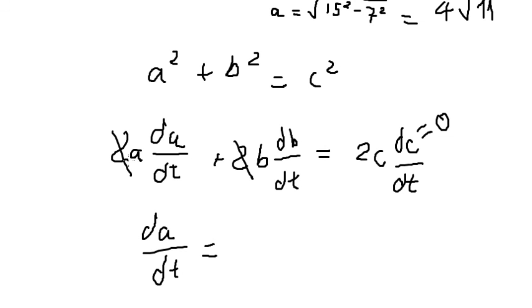And later divide both sides with a, so you get negative b times db/dt divided by a.